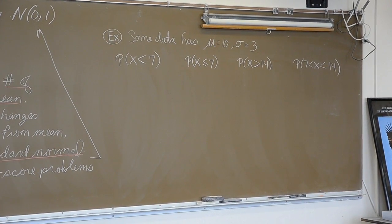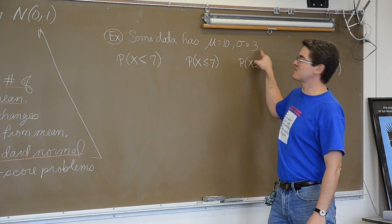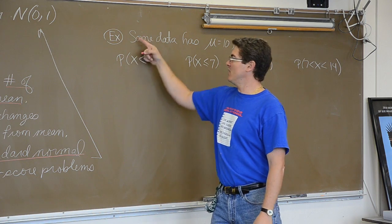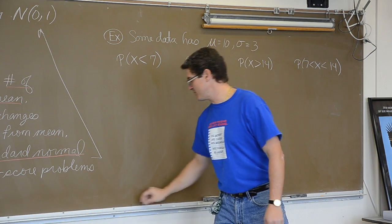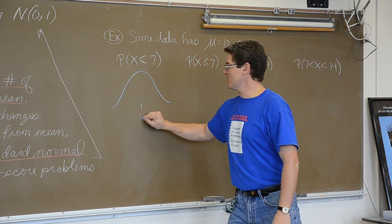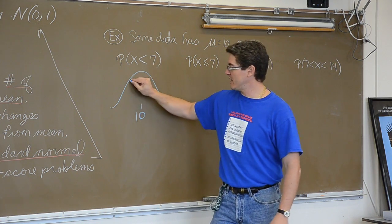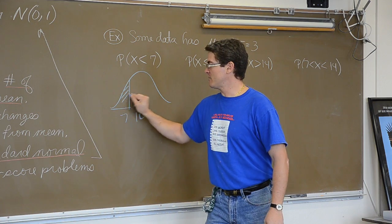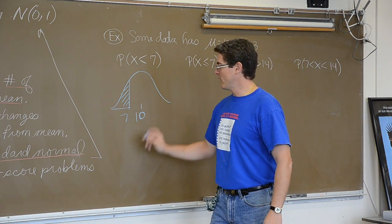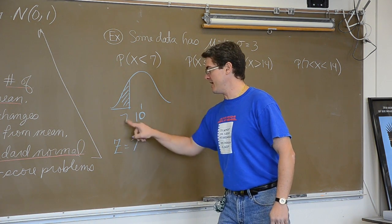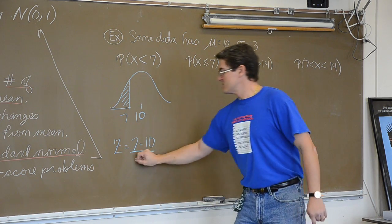We have a bell curve whose center is at 10 and whose standard deviation is 3. I want to find the probability of getting a piece of data that is less than 7. That is going to be represented by a bell curve centered around 10. We are going to find the probability of getting a score of 7 or less. I am going to shade the left hand tail which is how the shading is set up in your textbook.